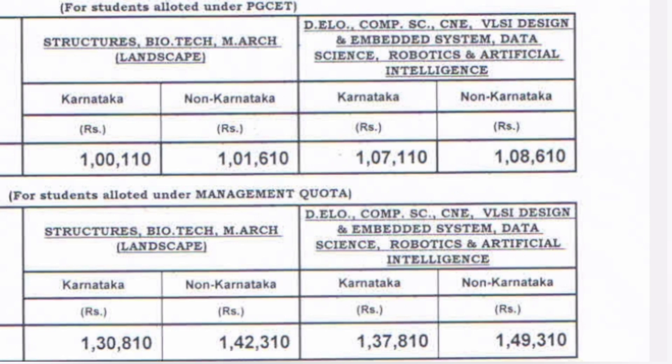Starting with PGCET fees for MTECH — there are two types of fee structures: one for Karnataka residents and one for non-Karnataka. For Karnataka residents, the one-year fee is 1,10,000 rupees. For non-Karnataka, it is 1,11,610 rupees. So you can see there is a difference of approximately 1,500 rupees, with non-Karnataka students paying 1,500 extra.